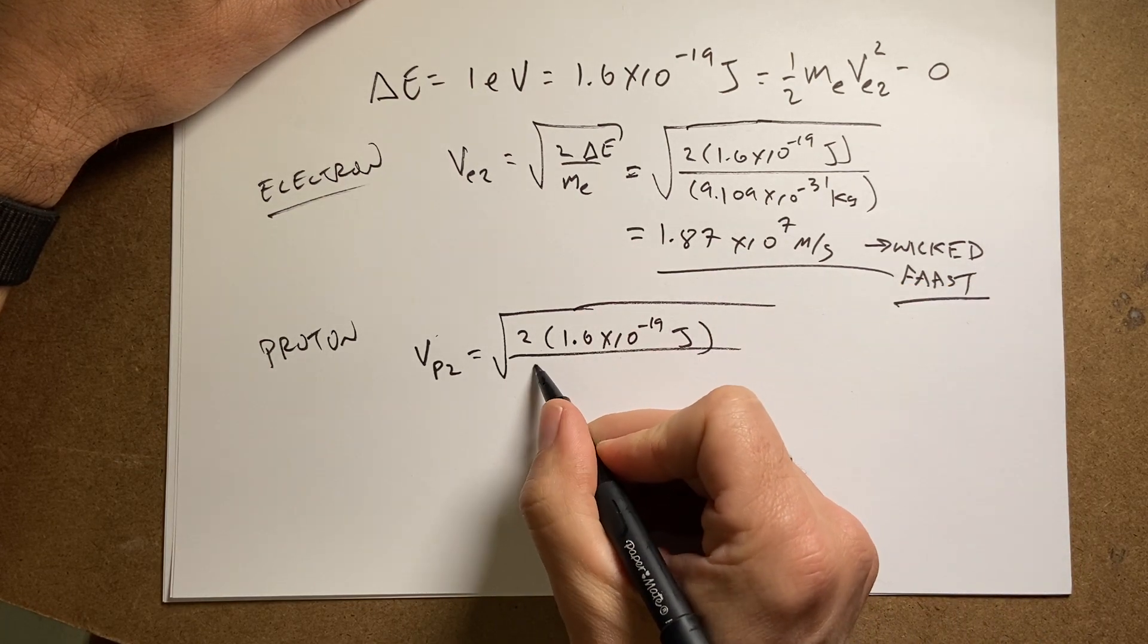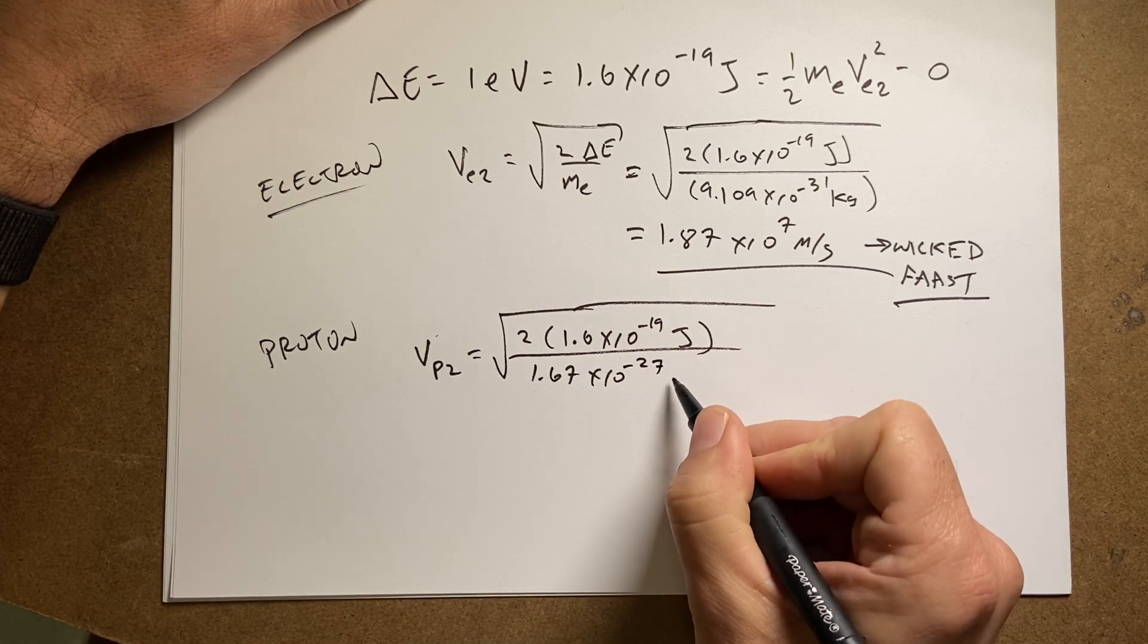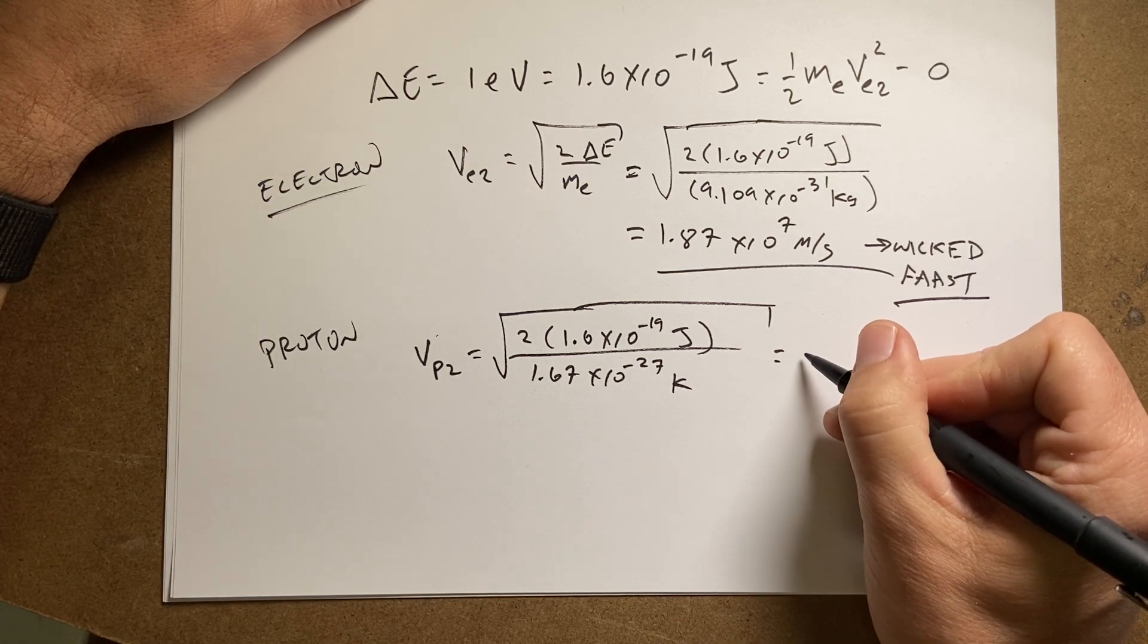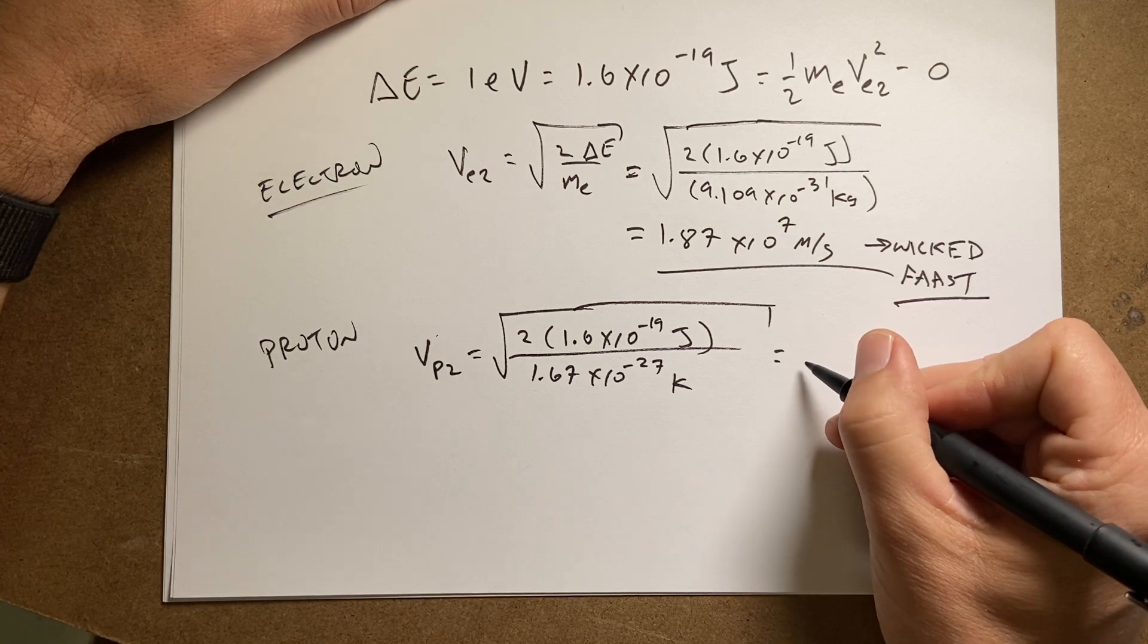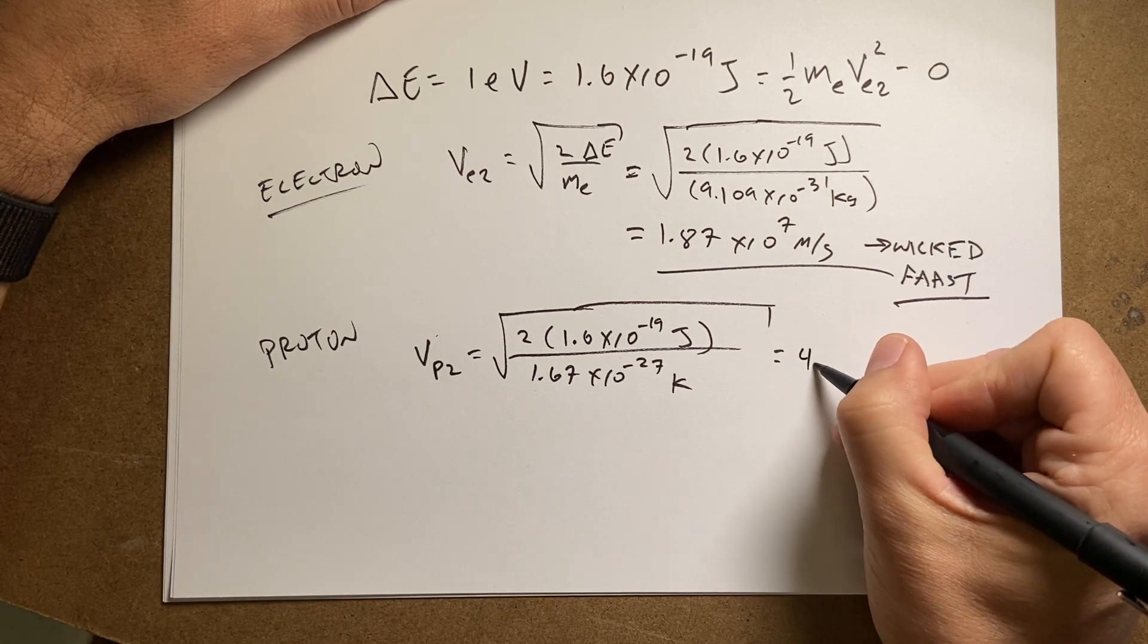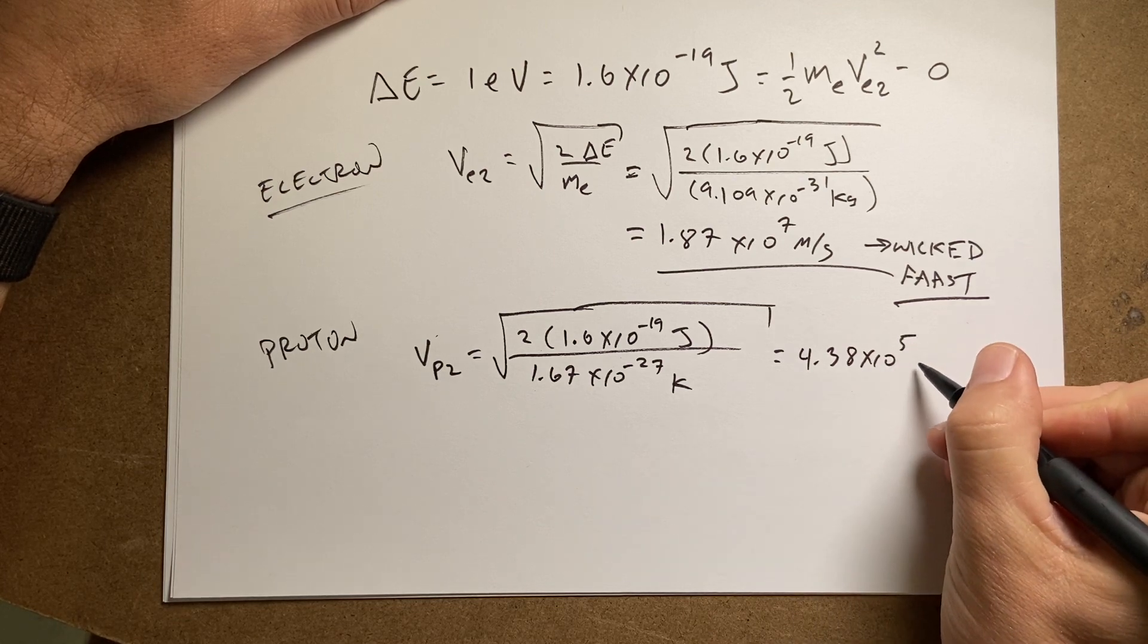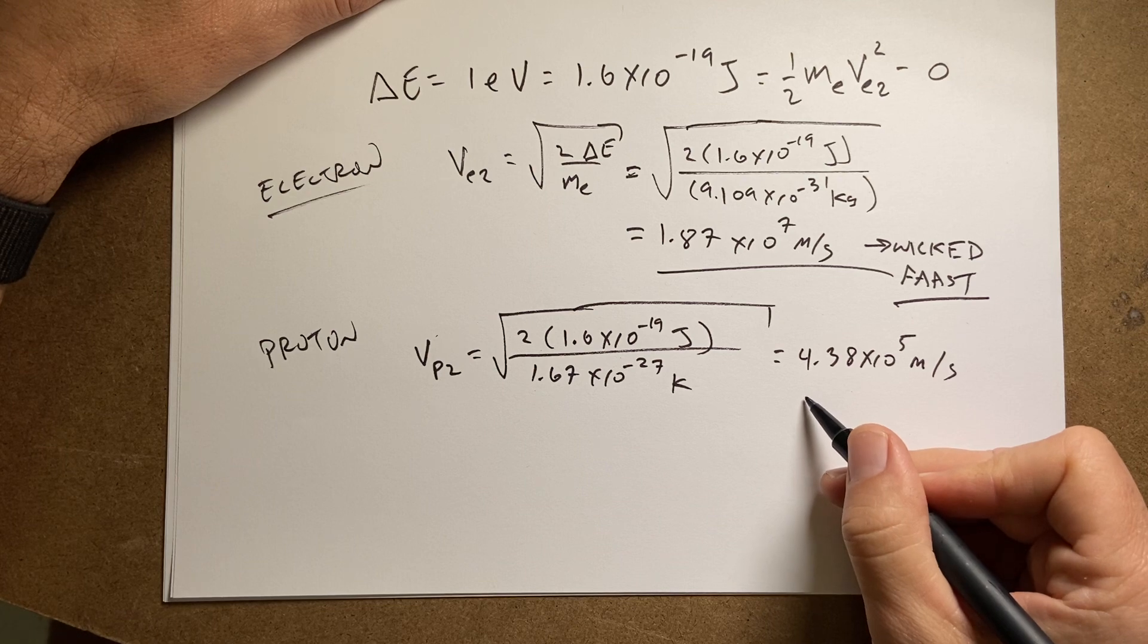divided by the mass of the proton, which is 1.67 times 10 to the negative 27th kilograms. And if I put that in my calculator, I get, where'd it go? I did it. Oh, here, it's over here. I get 4.38 times 10 to the fifth meters per second.